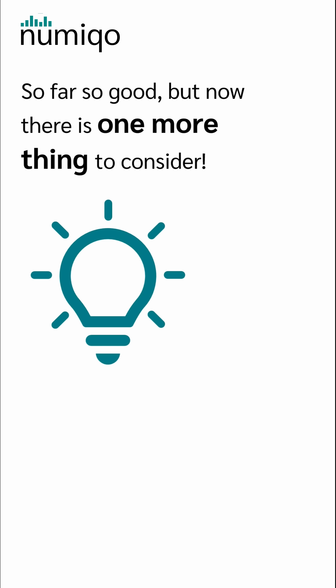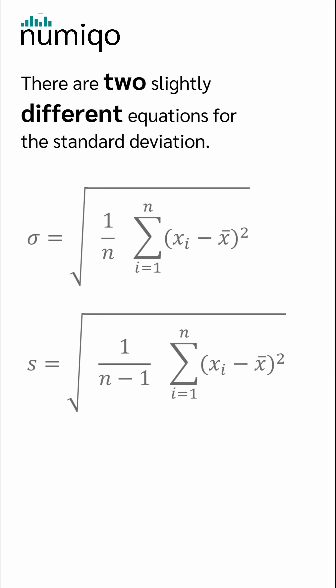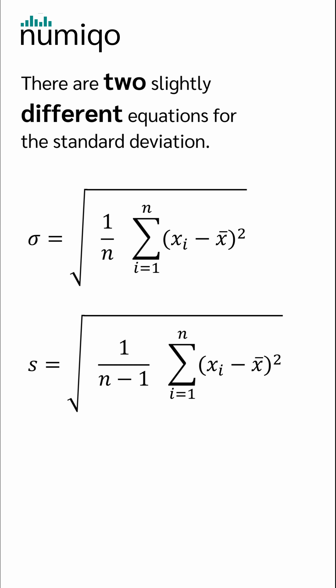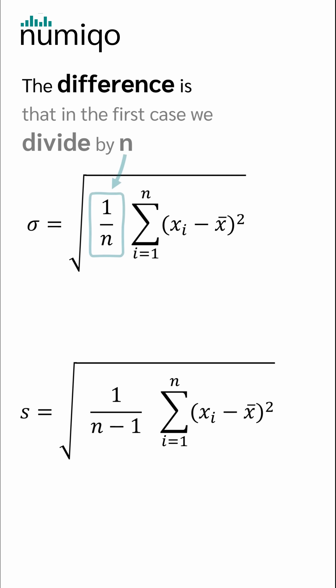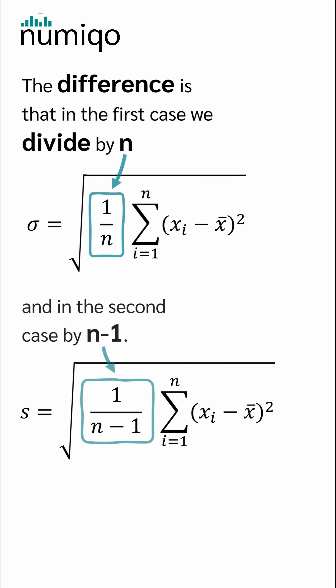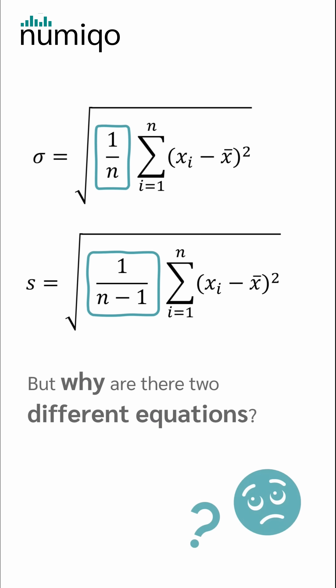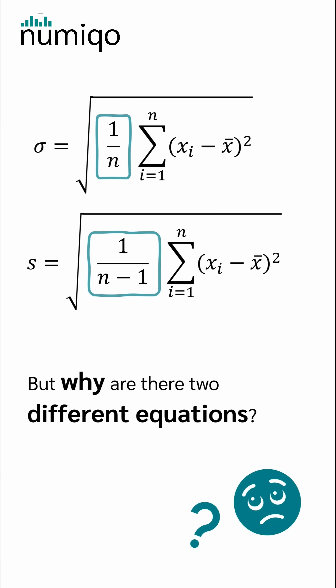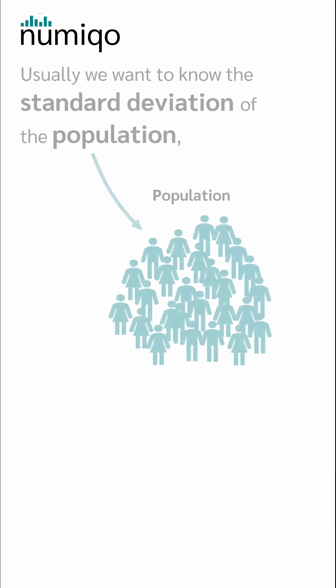So far so good, but now there is one more thing to consider. There are two slightly different equations for the standard deviation. The difference is that in the first case we divide by n and in the second case by n-1. But why are there two different equations?